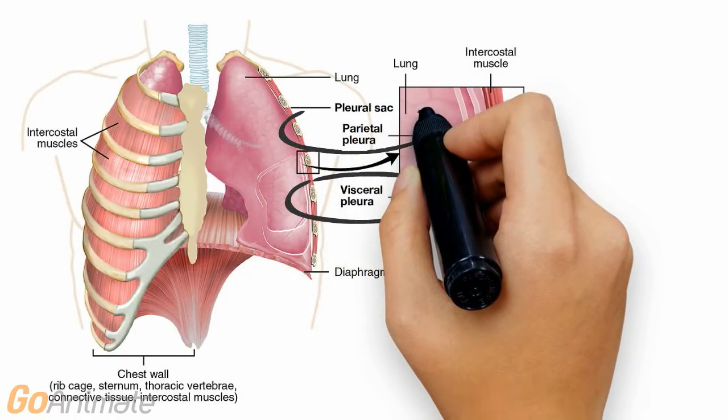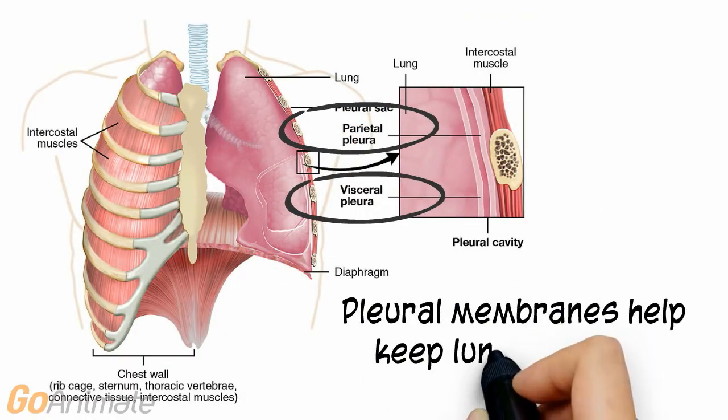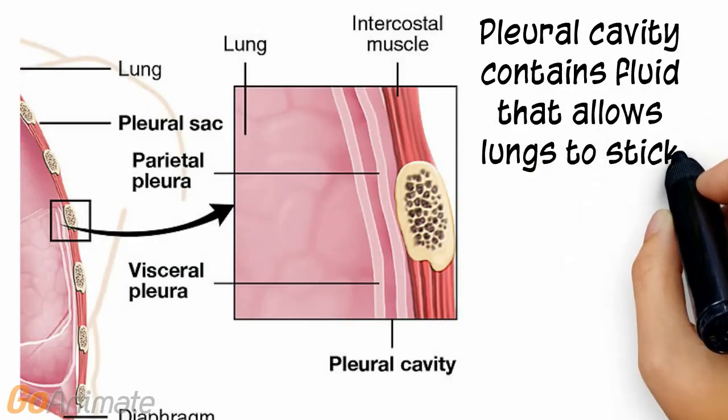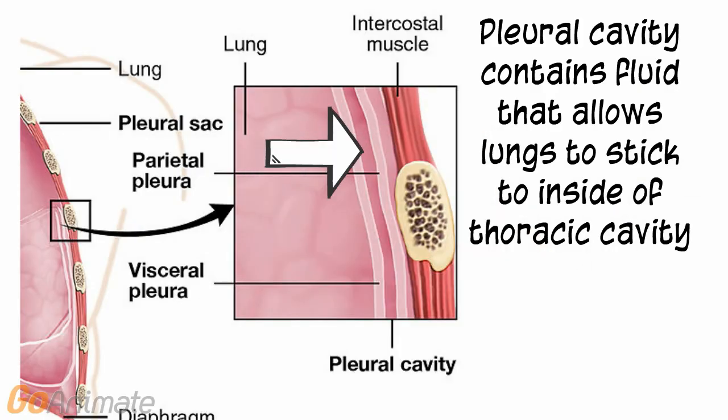The pleural membranes help to keep the lungs inflated. There is a visceral pleura, which is in contact with the lungs, and the parietal pleura, which lines the inside of the thoracic cavity. The pleural cavity contains a fluid that allows the lungs to stick to the inside of the thoracic cavity, helping to keep the lungs inflated.